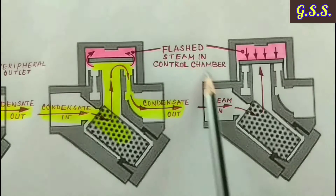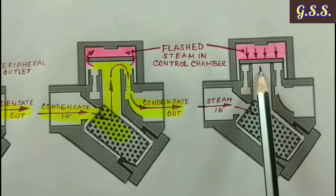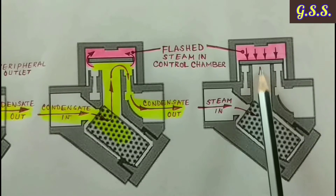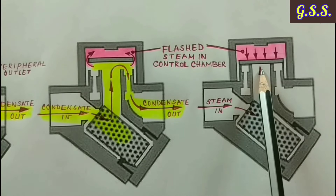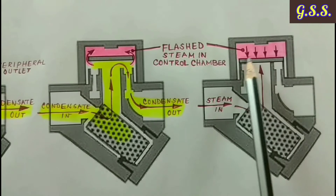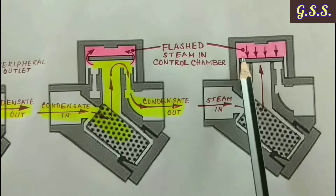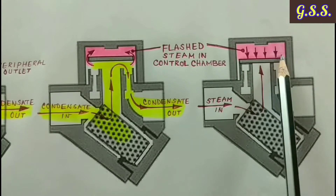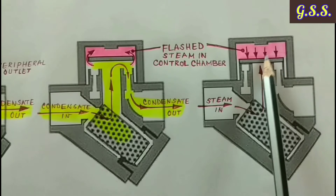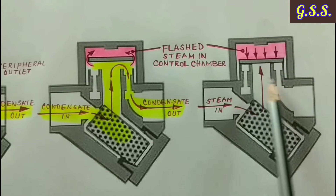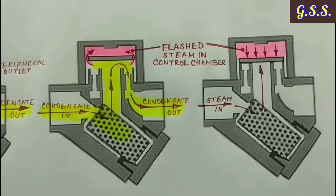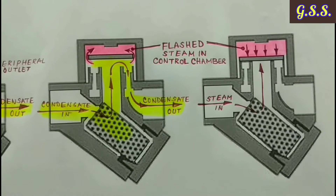In this condition, the upward force on the disc equals the inlet area multiplied by the incoming pressure of steam or condensate. The downward force on the disc equals the flash steam pressure in the control chamber multiplied by the disc top area. Since the disc top area is much greater than the inlet area, the downward force becomes higher, which pushes the disc down and the flow path is closed.